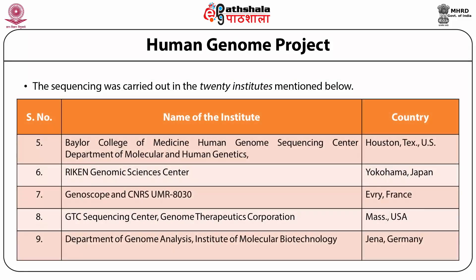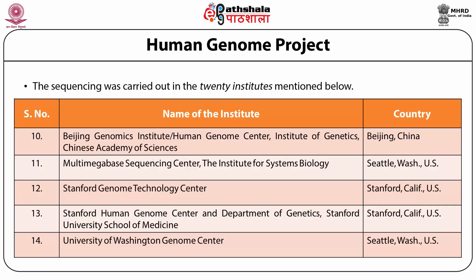Further institutes included Baylor College of Medicine Human Genome Sequencing Center in Houston, Texas; the RIKEN Genome Sciences Center in Yokohama, Japan; the Genoscope and CNRS-UMR-8030 in France; the GTC Sequencing Center at Genome Therapeutics Corporation in the United States; the Institute of Molecular Biotechnology in Germany; and the Beijing Genomics Institute at the Chinese Academy of Sciences in Beijing, China.